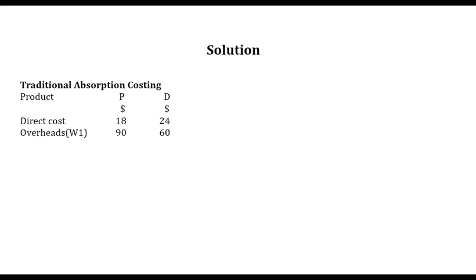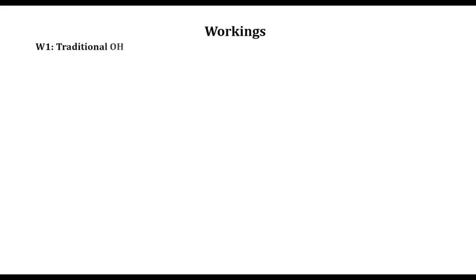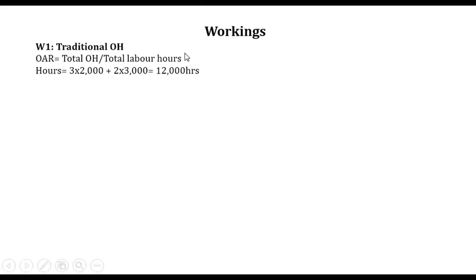Under the absorption costing system, overheads are absorbed on a direct labor hour basis. We have to determine total direct labor hours. We are given direct labor hours per unit: 3 for P and 2 for D. Production is 2,000 for P and 3,000 for D. So total hours for P is 3 times 2,000, and for D is 2 times 3,000. We obtain a total of 12,000 hours.